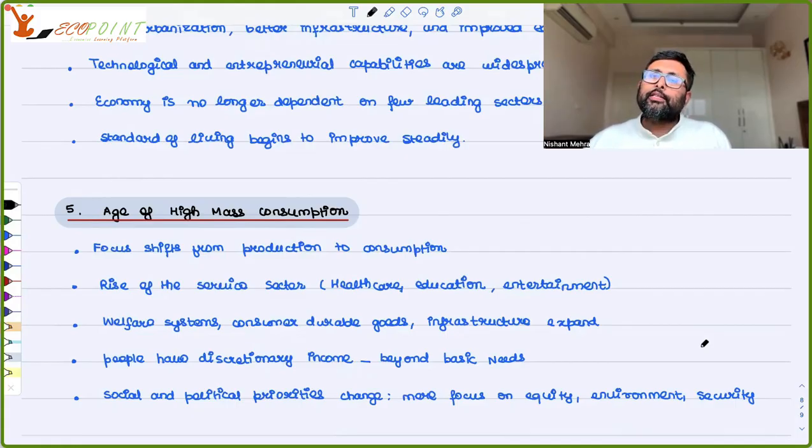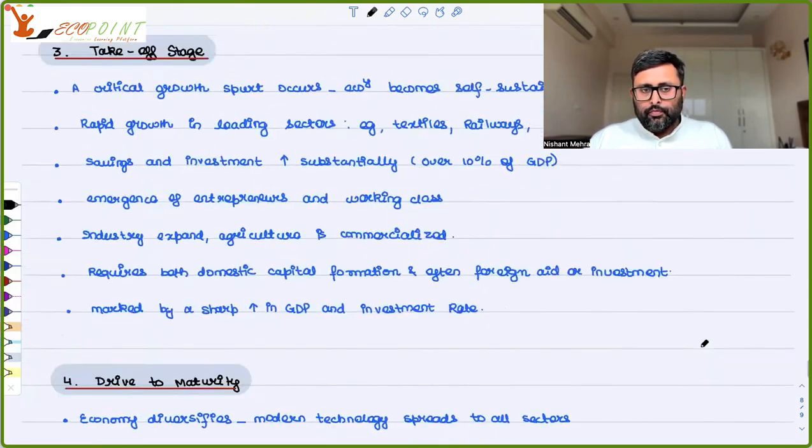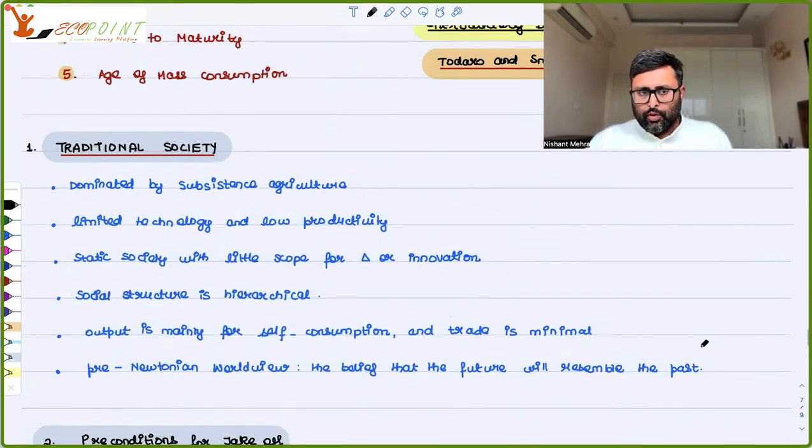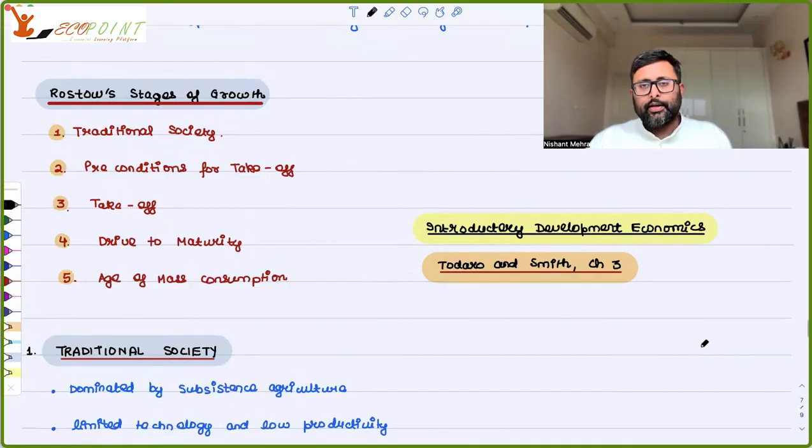All of these are the different stages of growth through which every economy has to pass, whether developed economy or developing economy. Developed economies have gone through these stages, developing economies are going through these stages. This is what Rostow thought about the development path for the different economies. I hope it was useful to you. Thank you.